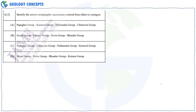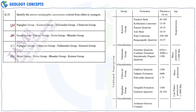Question 32: Identify the correct stratigraphic succession ordered from oldest to youngest. There are two successions here — one of the Kadappa Supergroup and one of the Vindhyan Supergroup. For the Kadappa Supergroup: Papaghani is the oldest, then Chitravati, Nallamalai, and Kurnool.